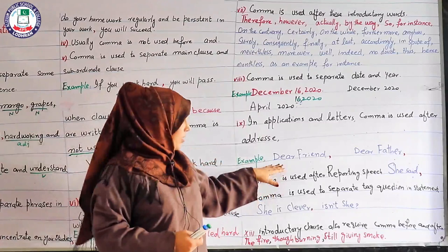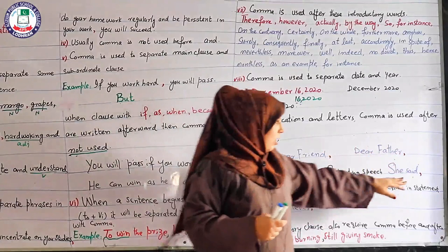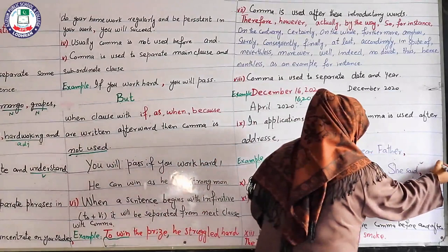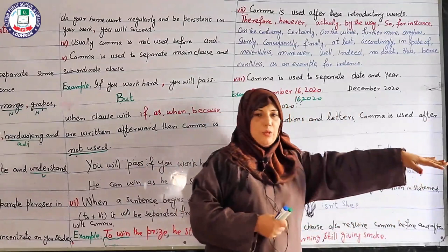Comma is used after the reporting part of speech in direct speech. In direct and indirect speech, when we write a direct sentence, the reporting part — the smaller portion written before the reported speech — is separated from it by a comma. After the reporting part of speech, a comma is placed before writing the reported part of speech.